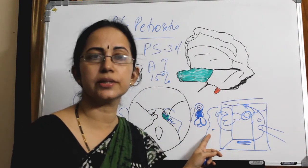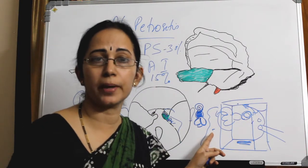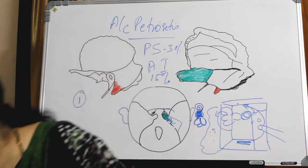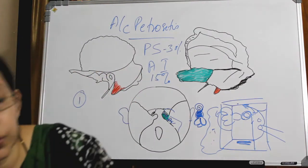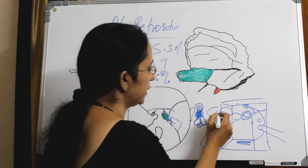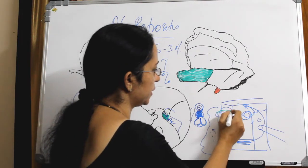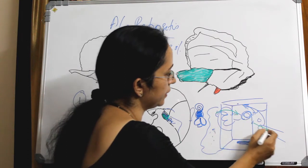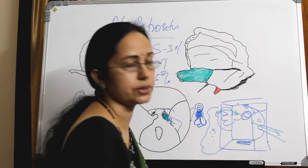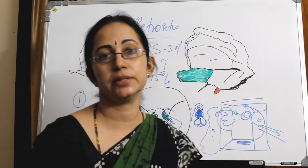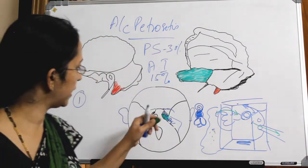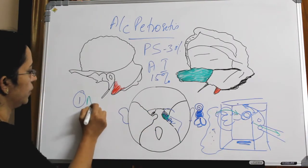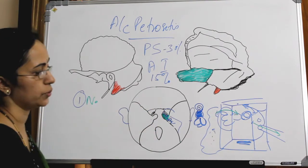What is the natural drainage pathway for the mastoid? Secretions collect in the mastoid and the natural drainage pathway is the aditus — it goes to the middle ear and from the middle ear to the Eustachian tube. There is no such natural pathway for the petrous apex.